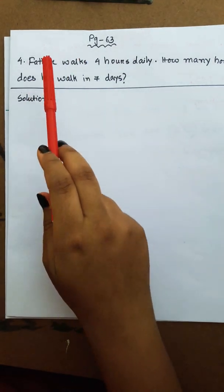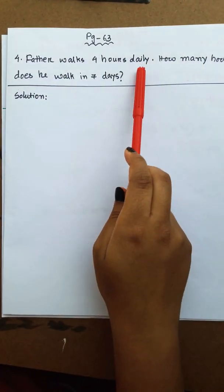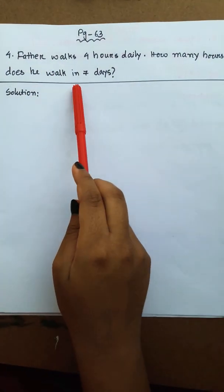Now, the next question. Father walks 4 hours daily. How many hours does he walk in 7 days?